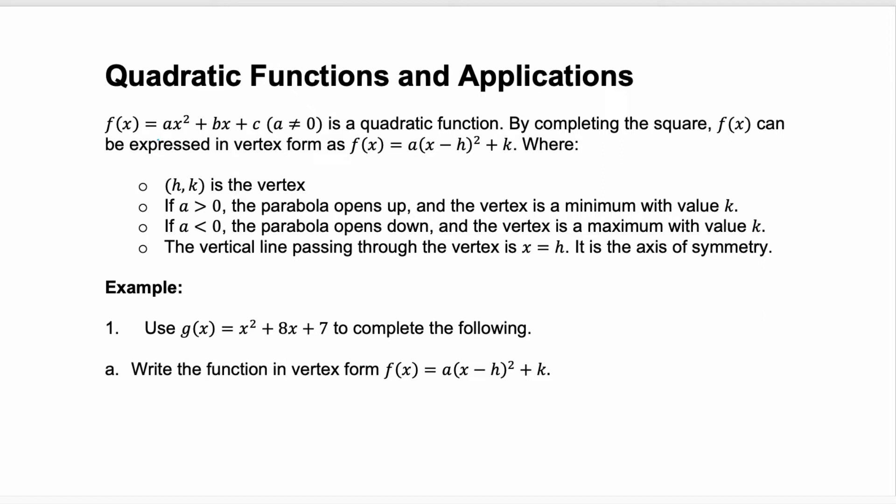A quadratic function written in the form ax squared plus bx plus c, where a isn't zero, is in standard form. And if we complete the square on this quadratic form, we end up with vertex form, which is a times the square of x minus h plus k.